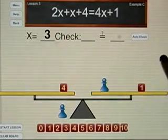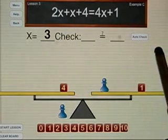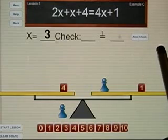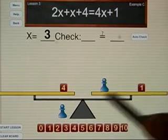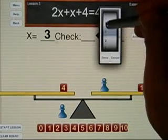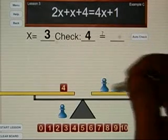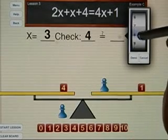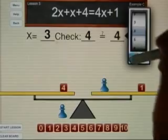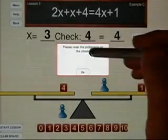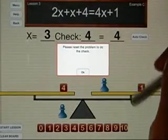Now, we have to do the check. Actually, every example of Hands-On Equations requires a check. Well, if we try to do the check here, we have a 4 on the left side. And on the right side, 3 and 1 is 4. So notice that 4 does equal 4, but we get a pop-up: Reset the problem to do the check. This is not the correct check for that example.